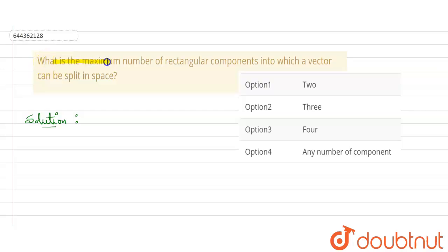It is asked, what is the maximum number of rectangular components into which a vector can be split in space? Four options are: two, three, four, or any number of components. It is particularly mentioned rectangular components.